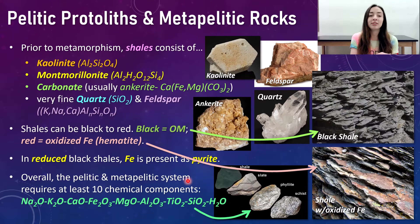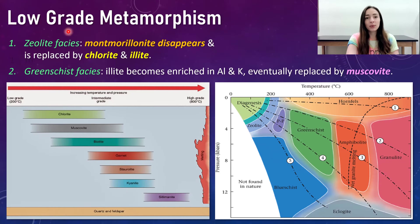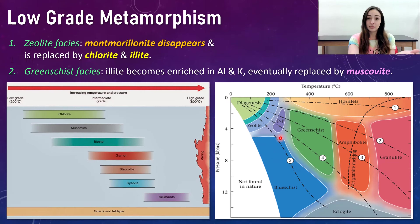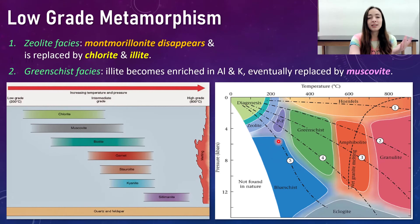Throughout the rest of the slides, we'll be talking about different mineralogical transitions throughout the metamorphism of shales. All of the minerals involve one or more of those chemical components. During low-grade metamorphism — which refers to lower temperatures and pressures — you have the zeolite facies and the greenschist facies. Looking at the figure to the bottom right, we can see that diagenesis crosses the line into metamorphism, then you have the zeolite facies, and then the greenschist facies.